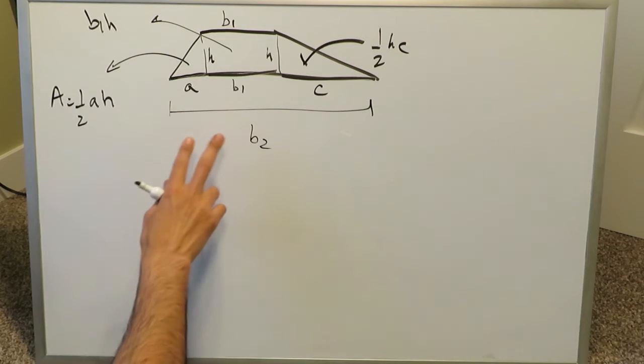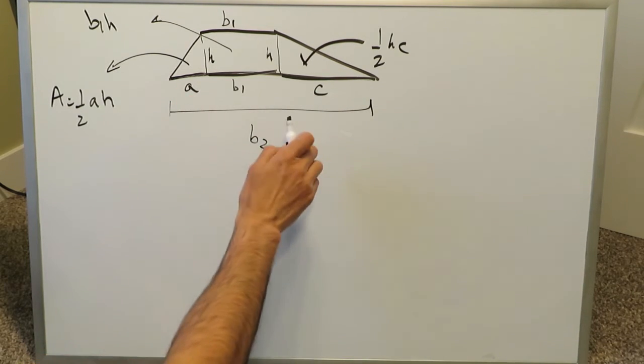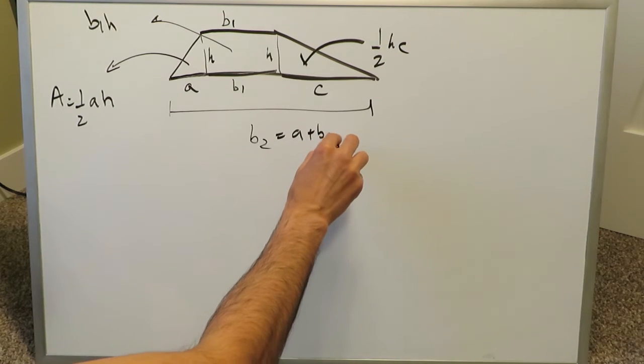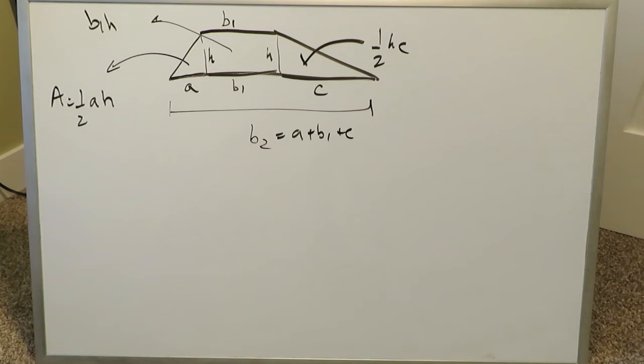You must also pay very special attention to this fact right here, the lower base. The lower base, b2, is made up of three segments: a plus b1 plus c. This fact will come very handy at the end.